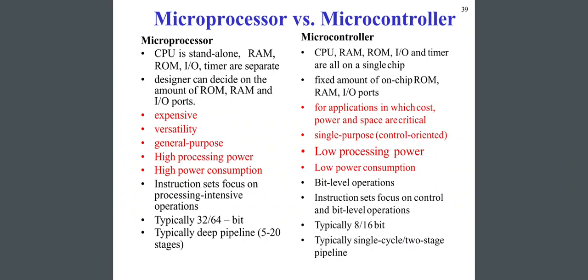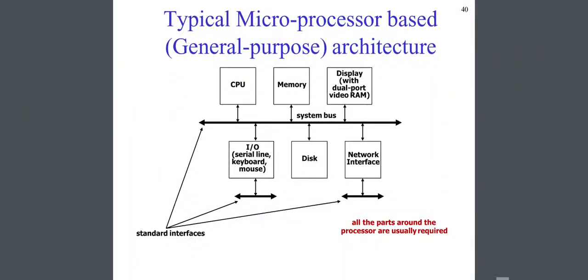Those are the main basic differences between a microprocessor and a microcontroller. There is a figure of a typical microprocessor-based general-purpose architecture where all parts around the processor are usually required. There is a system bus in the middle; on one side are input/output components — serial line, keyboard, mouse, disk, and network interface — all connected with the system bus as standard interfaces. On the other side are the CPU, memory, and display with dual-port video RAM.